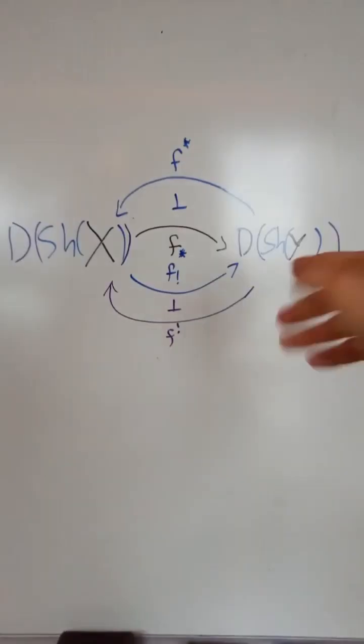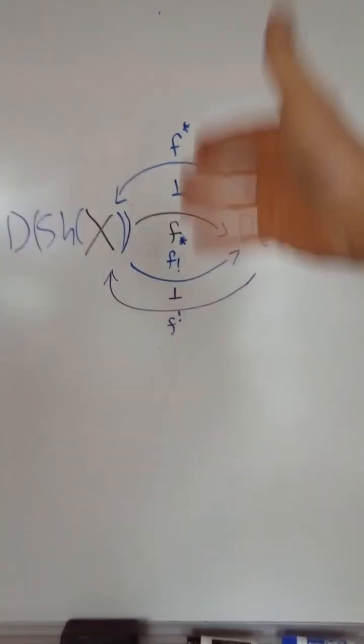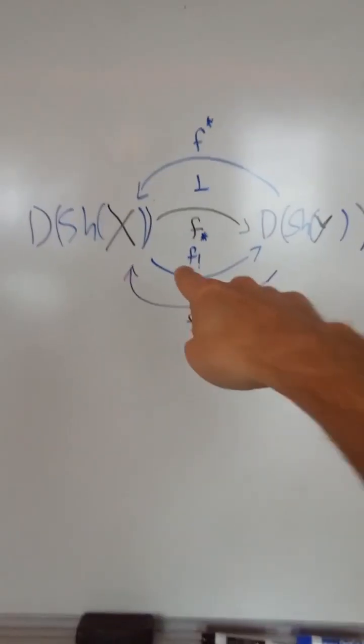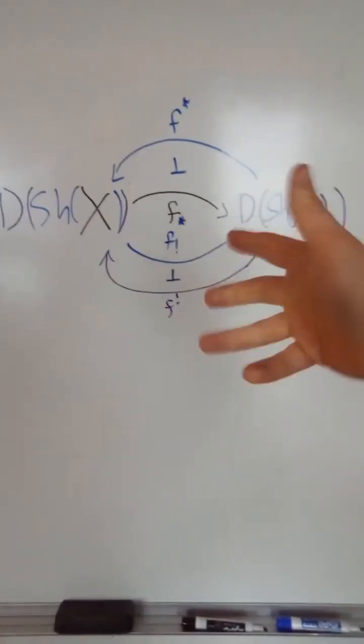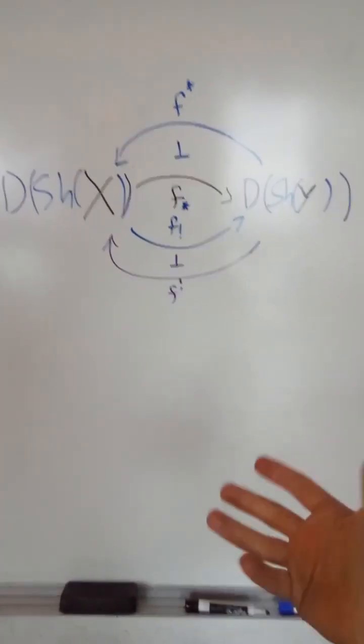Now if instead we consider the derived categories of sheaves, all of these get upgraded to derived functors, and now suddenly exceptional push forward actually has a right adjoint called exceptional pullback, which only exists on the derived level.